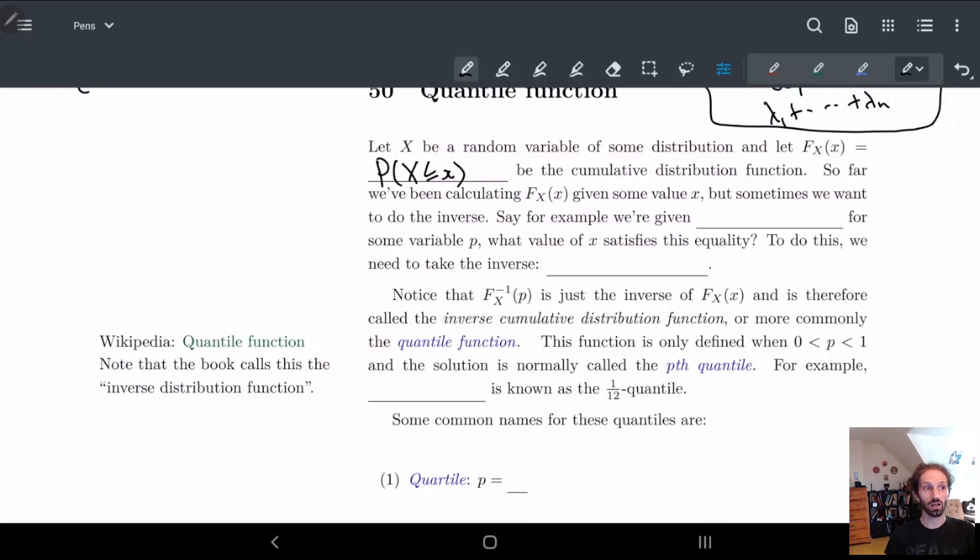But sometimes we want to do the inverse. For example, sometimes we might be given a value for this, so we might be told this is equal to p for some random variable p, and we want to do the inverse. In other words, we want to find x such that this is true.